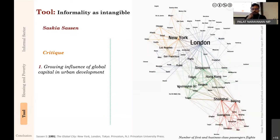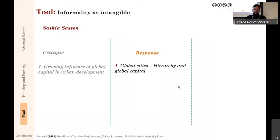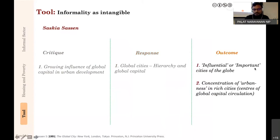Sassen's broader critique: we cannot look at cities in isolation—they are part of a broader network coming from global capital flows. Her response was the concept of global cities, with cities higher in the hierarchy having larger capital flows. You create a hierarchical list by looking at investment banking flows, business-class passengers, transfer of goods. This meant certain cities are more important than others, and there is a concentration of 'urbanness' in these centers—what happens in New York gets conceptualized as 'very urban' because it is the center of global capital flow.